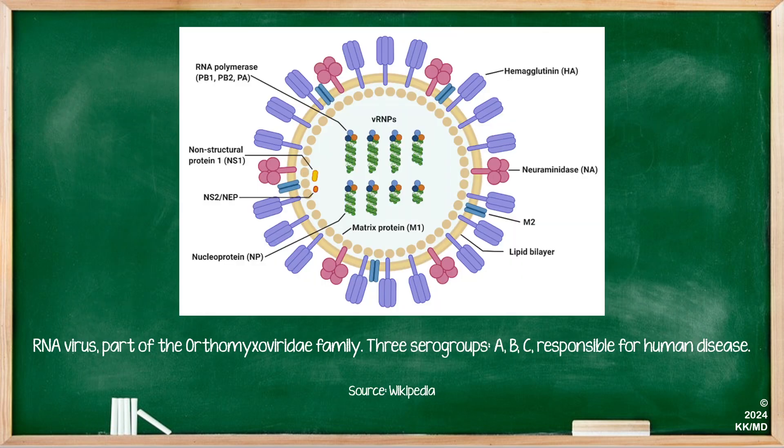Here we have a diagram of the influenza virus. Key things to note: it is an RNA virus which is part of the orthomyxoviridae family. There are three serogroups — A, B, and C — which are responsible for human disease. In the schematic you will notice the neuraminidase enzyme as well as the M2 protein, which will come into importance when we discuss the management of flu.